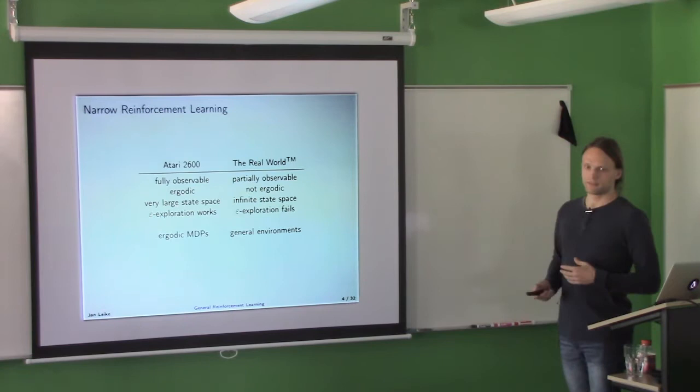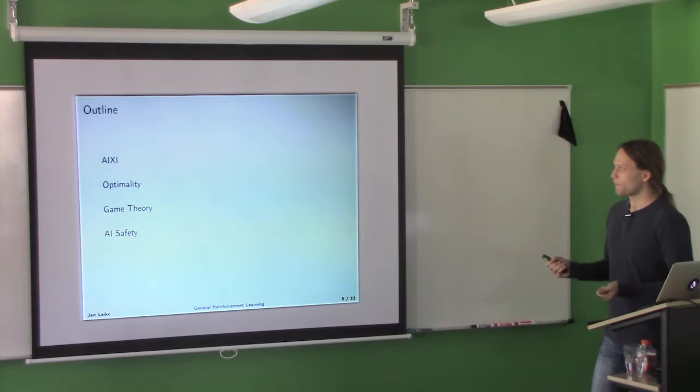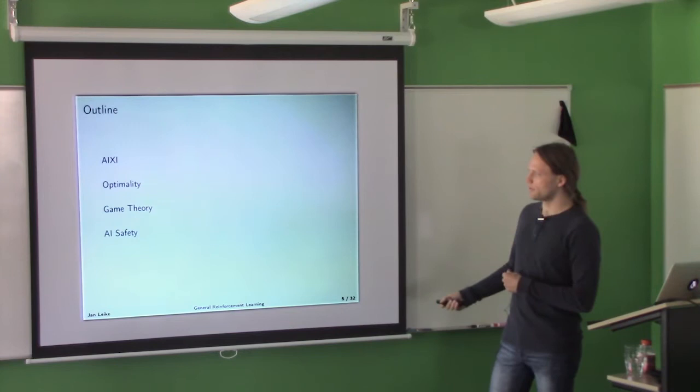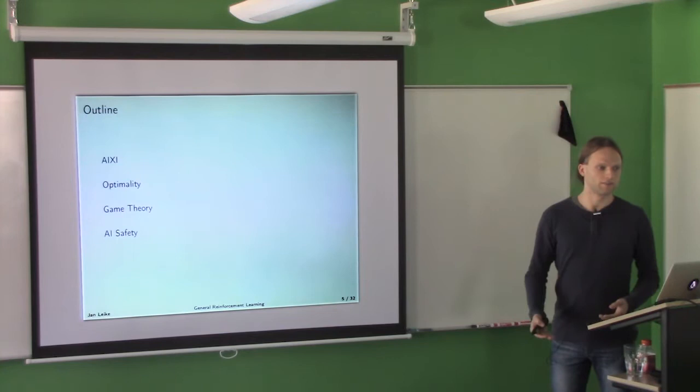A lot of this talk is going to be about understanding this environment class. In particular, I'm going to talk about AIXI and what it is, then about optimality — in what sense AIXI is optimal. Then I'll take a short detour into game theory and show you a cool new result, and finally connect all of this to AI safety and tell you why you should care.